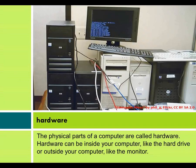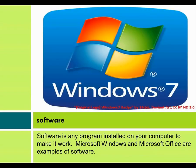Hardware. The physical parts of a computer are called hardware. Hardware can be inside your computer like the hard drive, or outside your computer like the monitor. Software is any program installed on your computer to make it work. Microsoft Windows and Microsoft Office are examples of software.